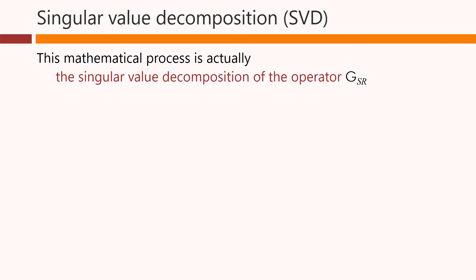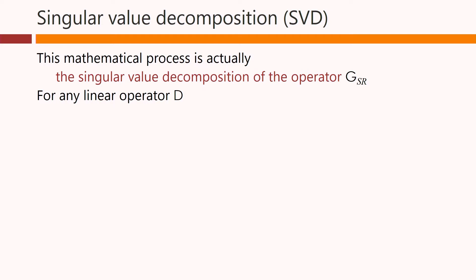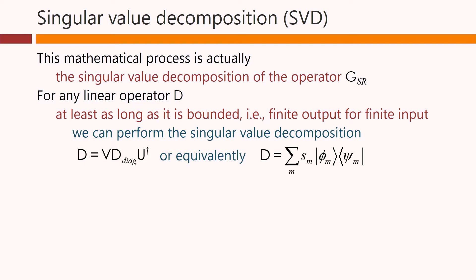This mathematical process is actually the singular value decomposition of the operator G_sr. For any linear operator we can think of, D, which we may think of as a matrix for convenience, at least as long as it is bounded—that is, it has a finite output for a finite input—we can perform the singular value decomposition. That is, we can write it in one of the following two equivalent forms. Here, as a product of operators, which again we can think of as matrices, and here involving the functions. These are exactly the same, by the way.